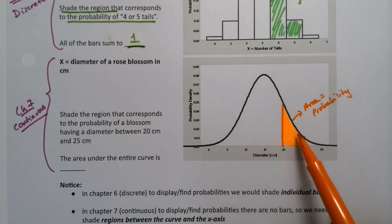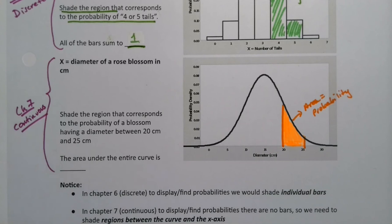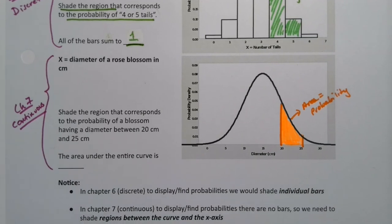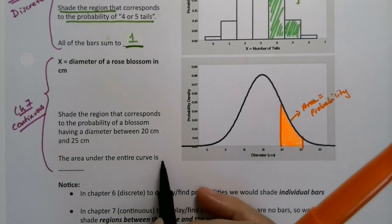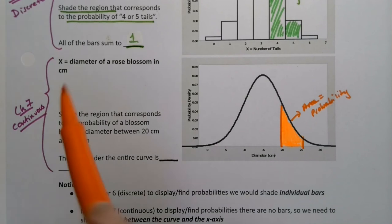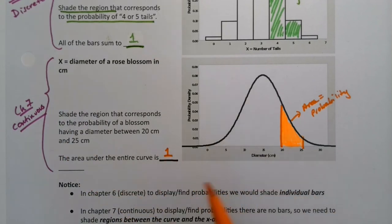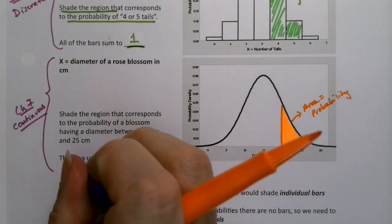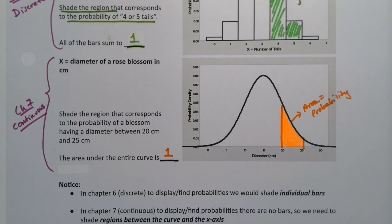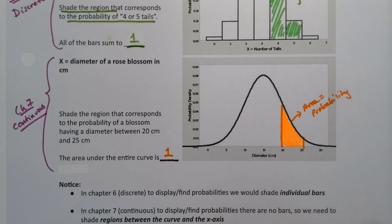We will make either StatCrunch or our calculator do this for us. But think about what you're doing: you're finding that area right there. If you find that area, that will be that probability. But as before, the area under the entire curve is 1. It has to be. That particular section has to be less than 1, but the area under the entire probability distribution must be 1 in order for it to be probability.